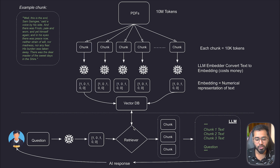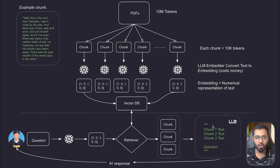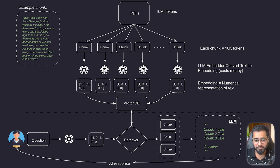So now we have the top five chunks, and what we are going to do is send both the question in plain text as well as the chunks in plain text to the LLM. The LLM now has all the relevant passages and also the user's question, so it is able to reason and give a very informed answer. And finally, the LLM is going to respond back to the user.